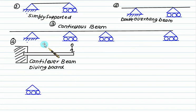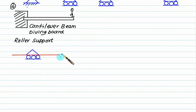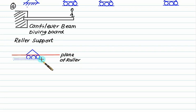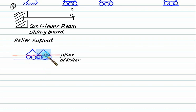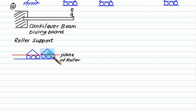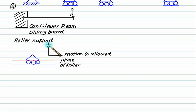Now let's look at the support and support reactions. For a roller support, the plane of the roller is shown and the roller moves parallel to that plane. It has full permission for horizontal motion but vertical motion is not allowed. So the roller always has one reaction perpendicular to the plane of roller, and no reaction exists in the horizontal direction.